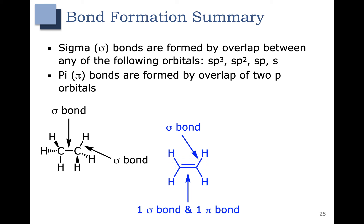One of those bonds is a sigma bond formed by the overlap of two sp2 hybrid orbitals, and one is a pi bond formed by the overlap of two p orbitals.